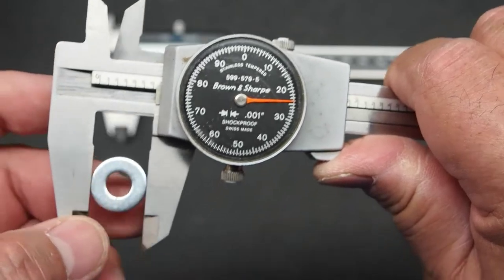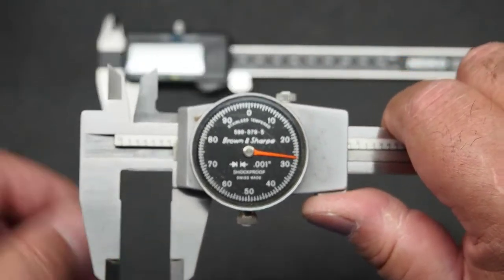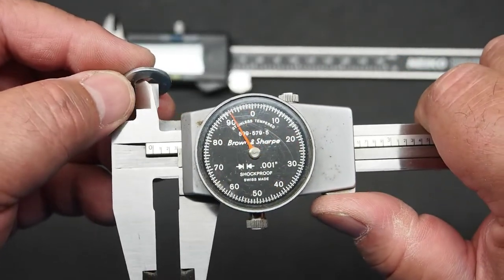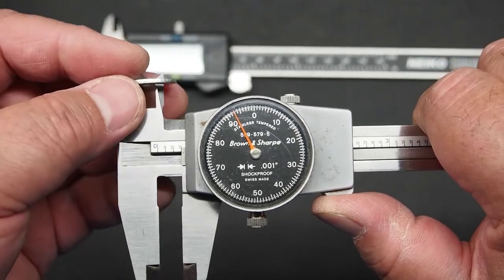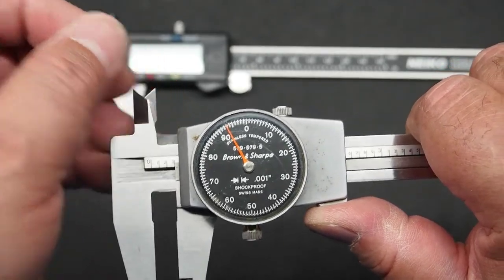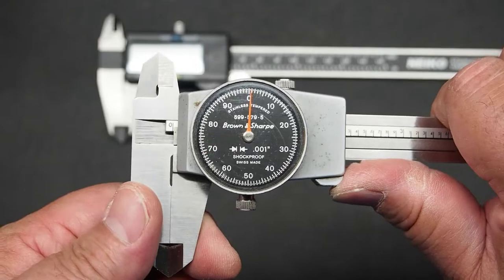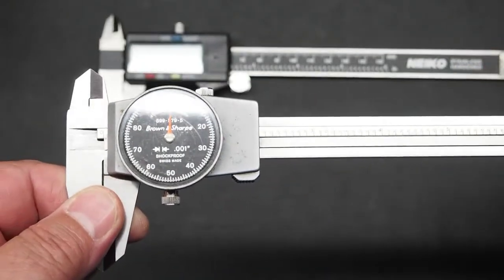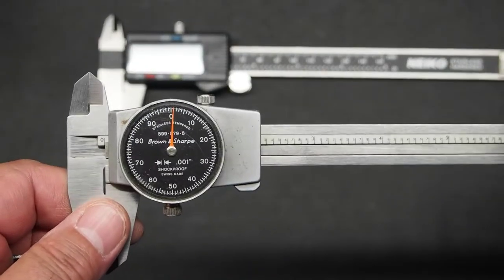So these are used for making outside measurements. You can use them for making inside measurements. They are very accurate. And then some people find the dial calipers a little bit difficult to interpret.